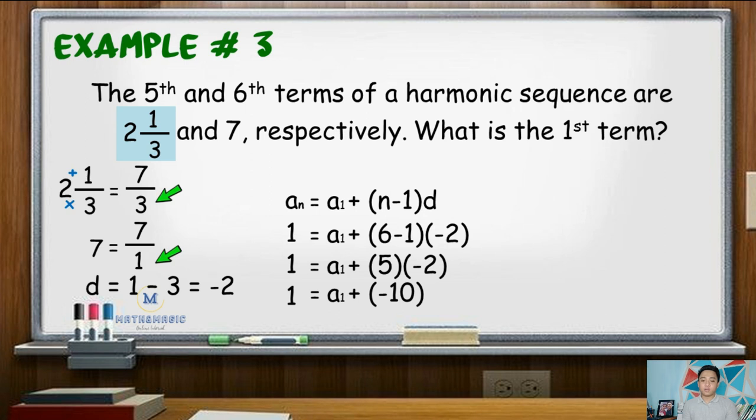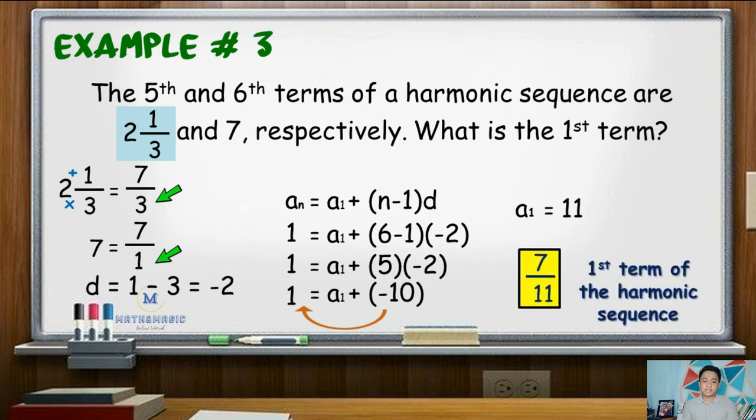We now have 1 equals a sub 1 plus negative 10. If we are going to transpose negative 10 to the left side of the equation, that would become positive 10. And adding 1, it will be 11. So the denominator of the first term is 11. Copying the numerator, that is 7. Hence, the first term for this harmonic sequence is 7 over 11.